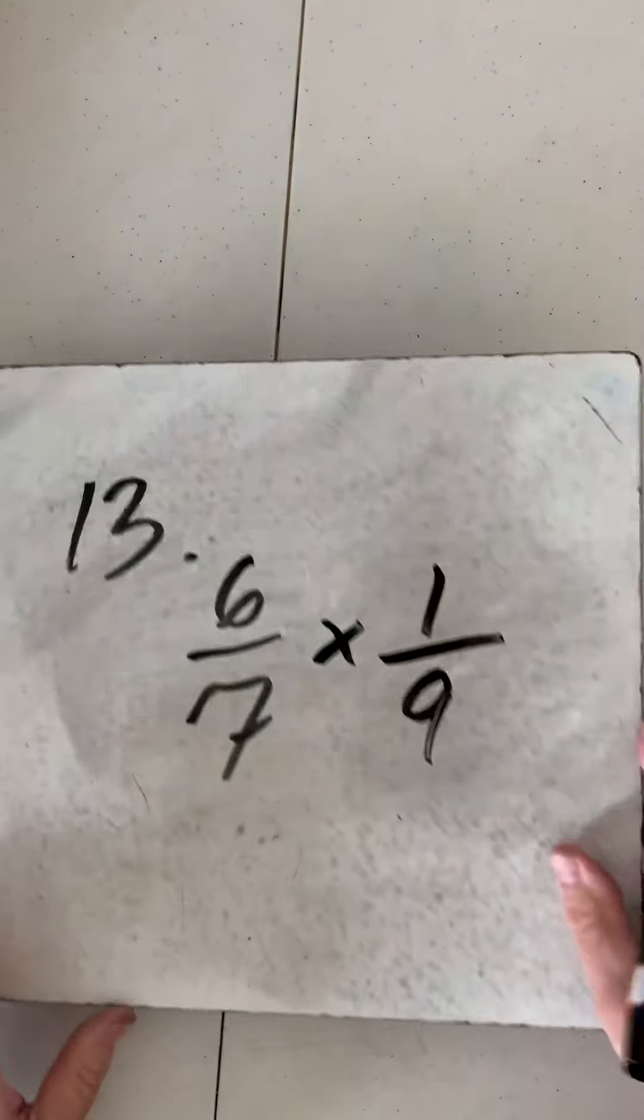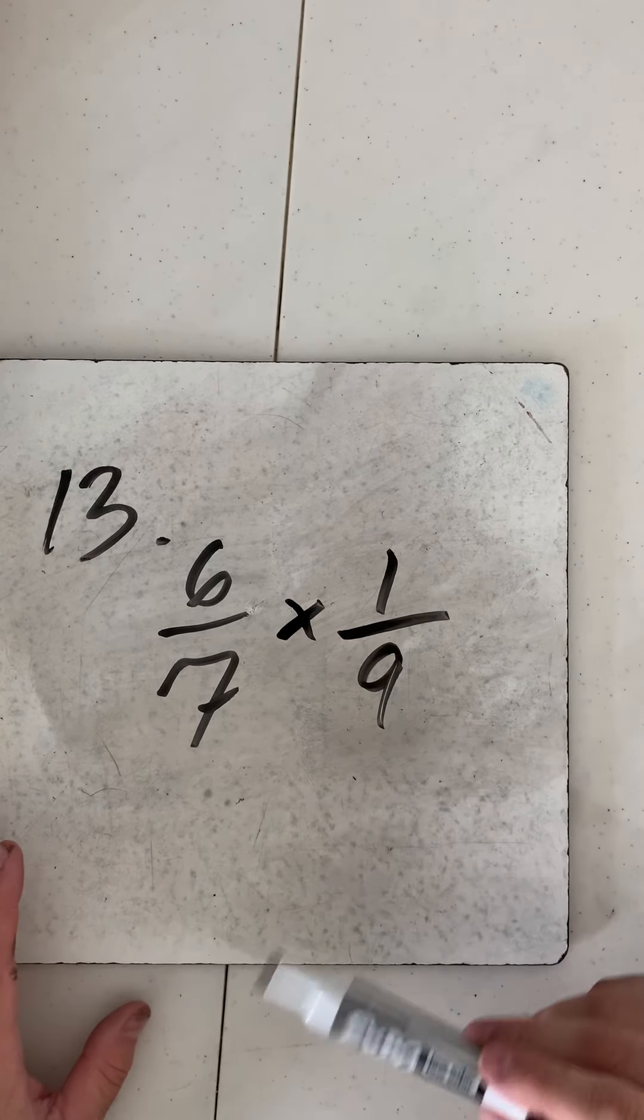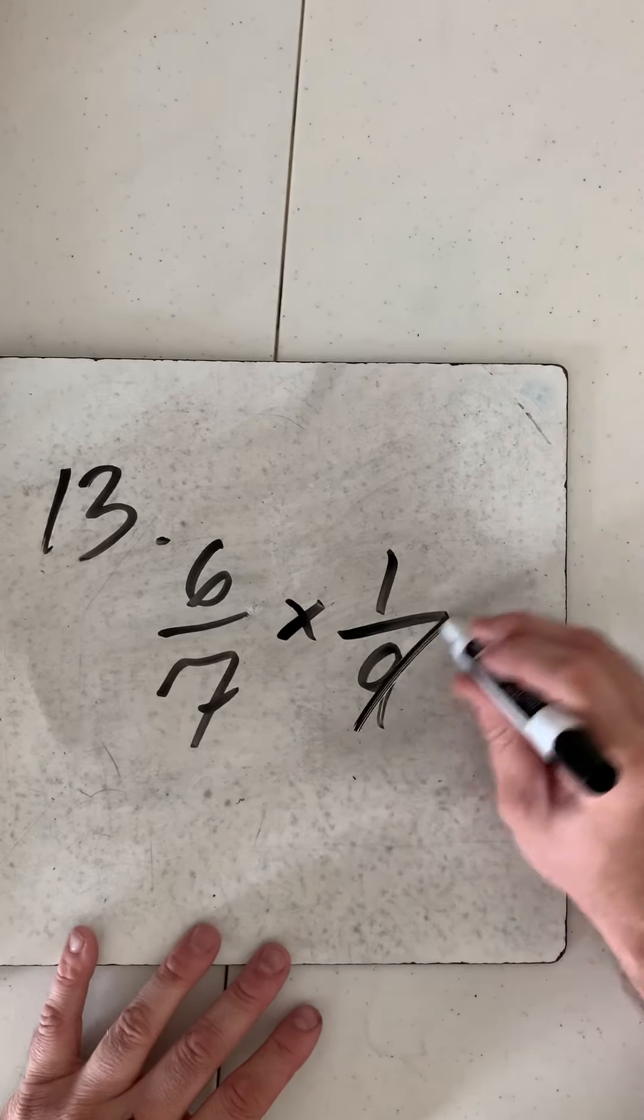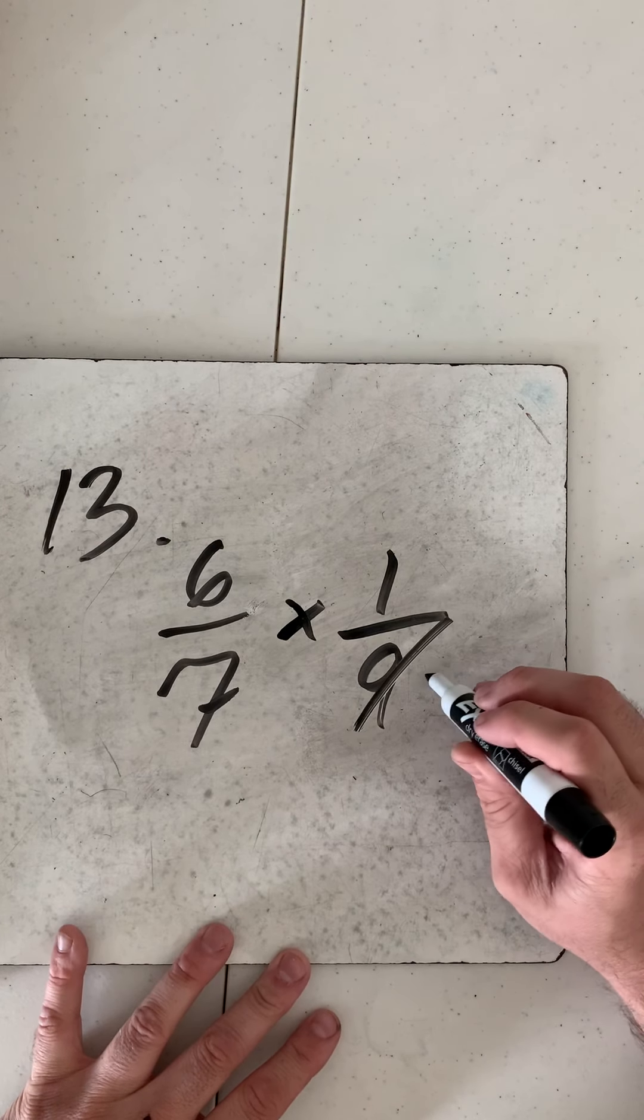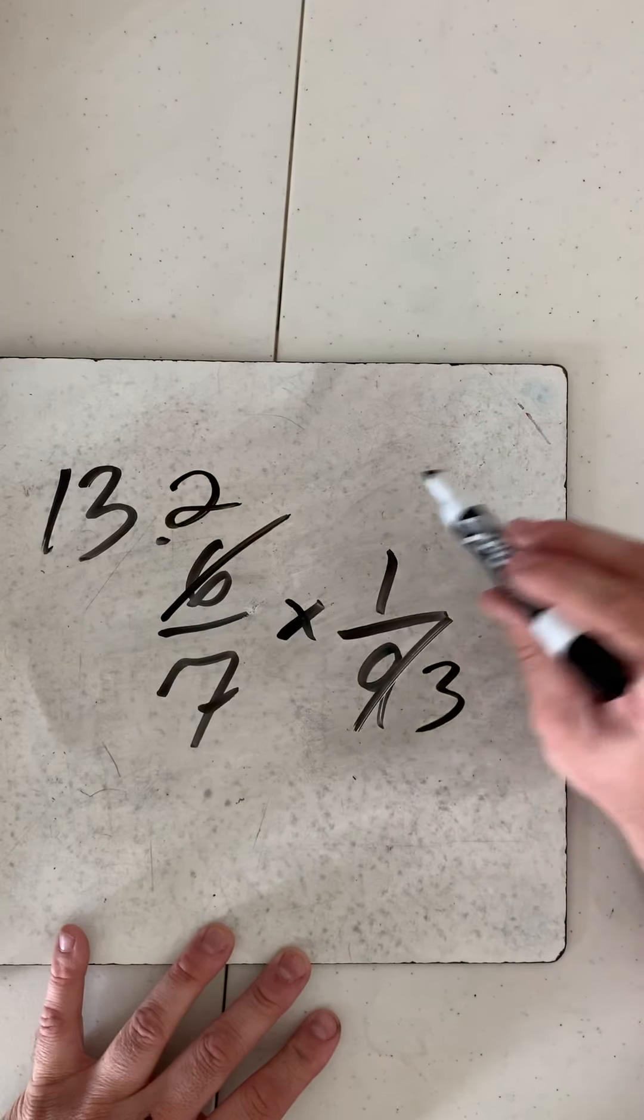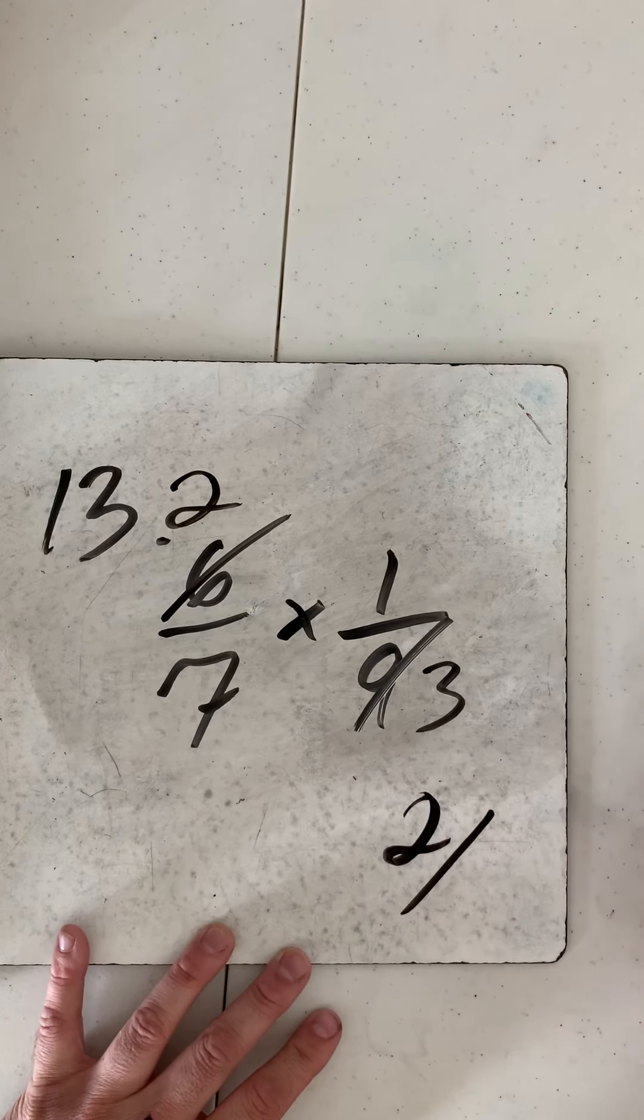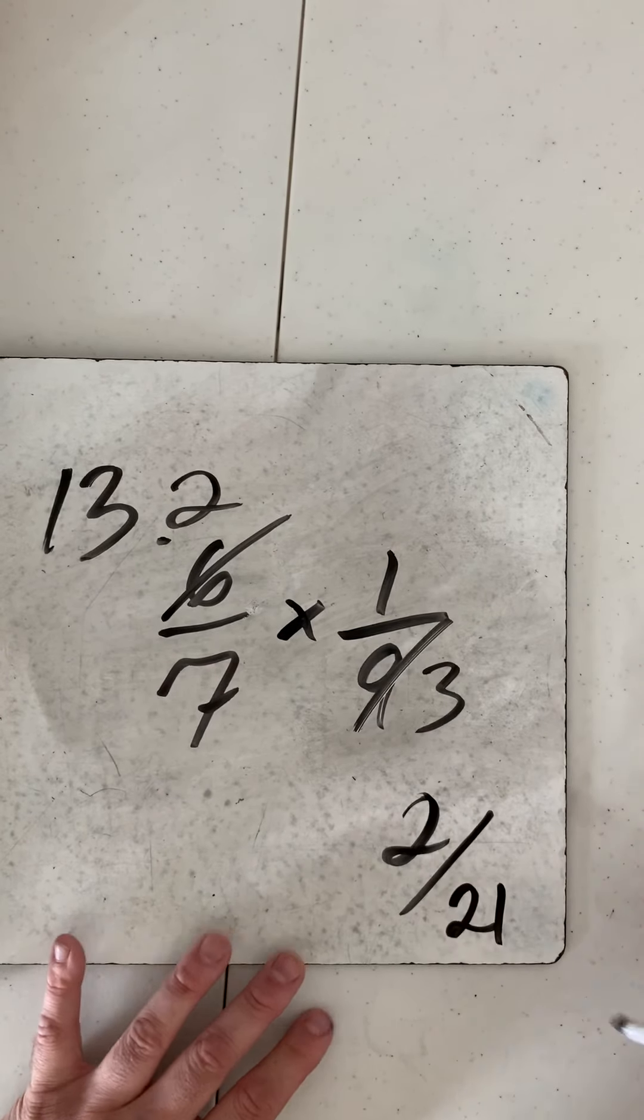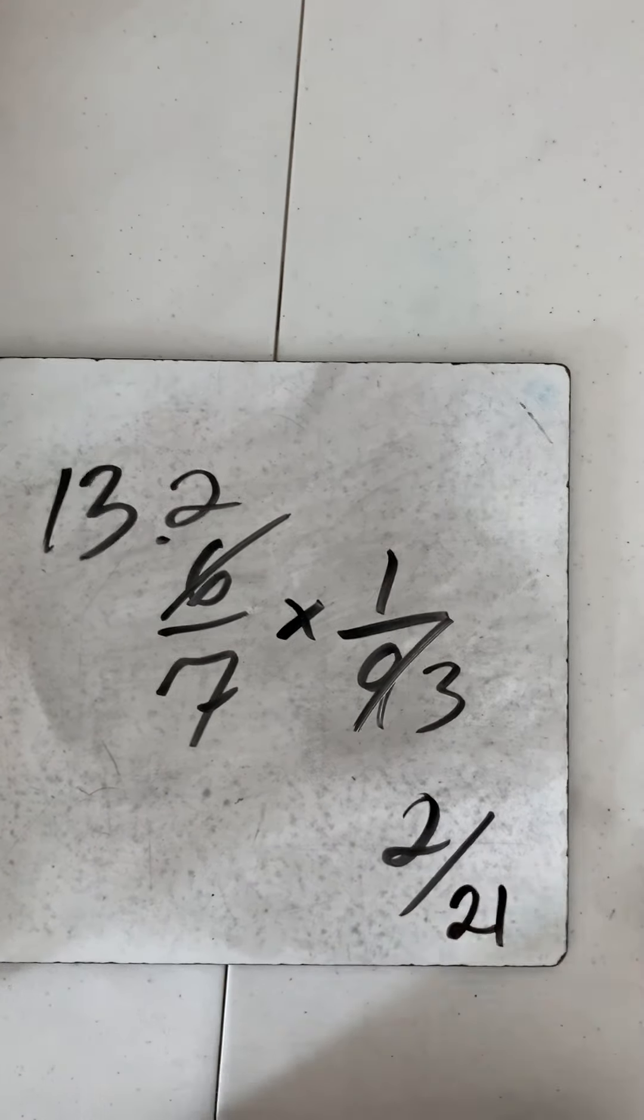Once you take the reciprocal, it's no longer a division problem, it is a multiplication problem. Now I can multiply or I can take GCFs. I'm gonna take GCF because I don't want to deal with the 63. Let's take a 3 out of the 9, that becomes 3. Let's take a 3 out of the 6, that becomes 2. That becomes 2 over 7 times 1 over 3. 7 times 3 is 21. 2 over 21, we're going to leave it just like that.